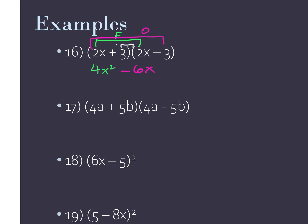3 times 2x — positive 6x. And then finally last, positive 3 times negative 3 is negative 9. Notice my middle terms here are canceling out — negative 6 plus 6 — and that's gone. So notice my result is the difference — subtraction sign — of two perfect squares. 4x squared is a perfect square, and so is 9. So whenever you see in your binomials that you have exactly the same numbers and letters but one's a plus sign and one's a minus, recognize that the answer is going to be the difference of two squares.